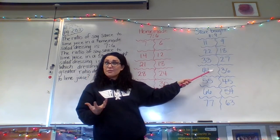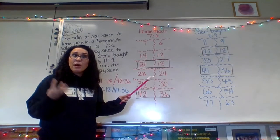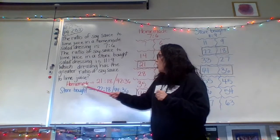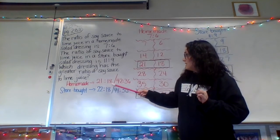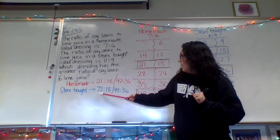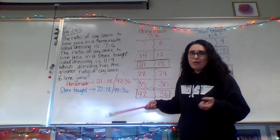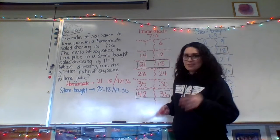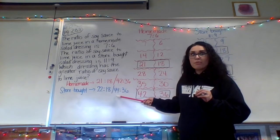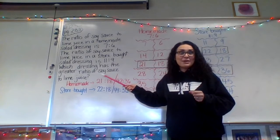I've pulled out the ratios with the same amount of lime juice so we can compare them directly. For homemade: 21 to 18 and 42 to 36. For store-bought: 22 to 18 and 44 to 36. The lime juice amounts — 18 and 36 — are the same in both cases, so we compare the soy sauce parts: 21 versus 22, and 42 versus 44. The store-bought dressing has the greater ratio of soy sauce to lime juice.